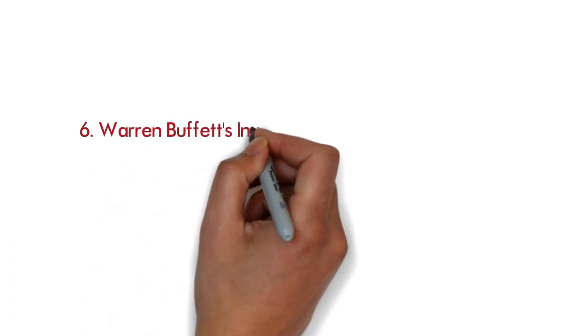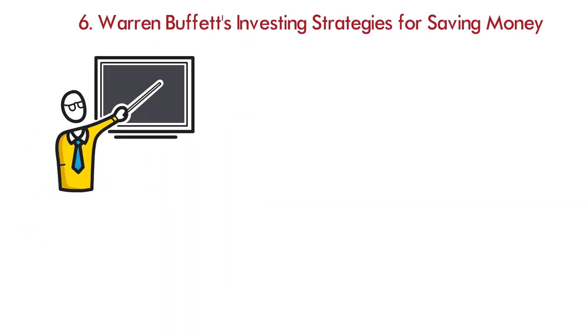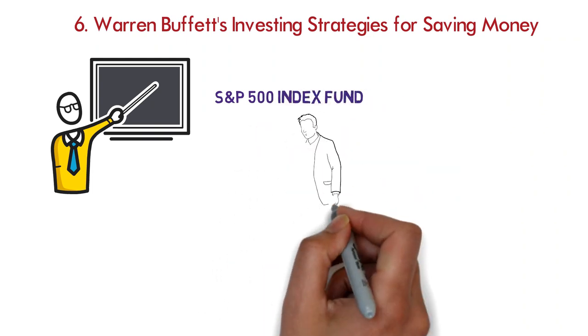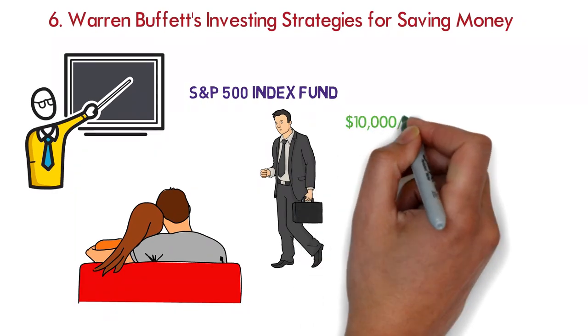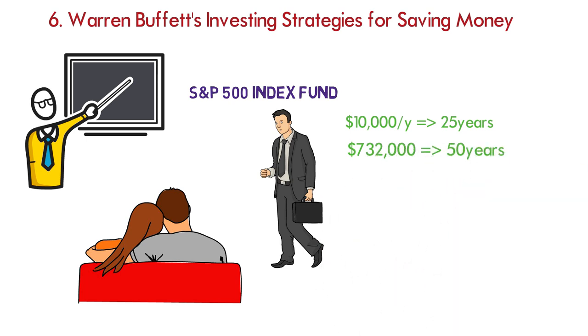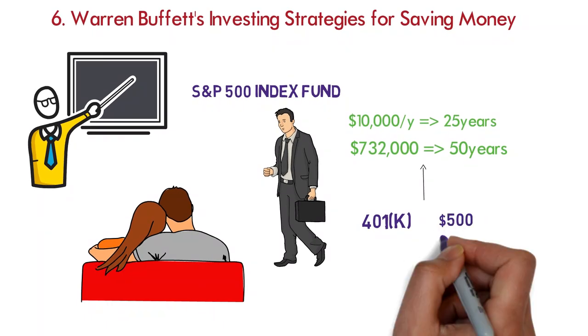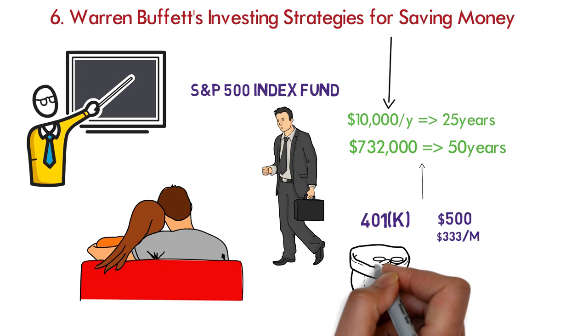6. Warren Buffett's Investing Strategies for Saving Money. Warren Buffett advocates a straightforward investment strategy. Purchase and hold an S&P 500 index fund for the long-term. In fact, Buffett instructed his attorney to do just that with the inheritance he's leaving to his wife. If you start investing $10,000 per year when you're 25, you'll have $732,000 by the time you're 50. A 7% annualized return is assumed. This is not as difficult as it appears. If you work for an employer who contributes to your 401k, you can invest $500 and if your employer contributes $333 per month, you'll have met your $10,000 annual investment goal. With compound interest, the money that you earn is added to the existing amount and grows exponentially.